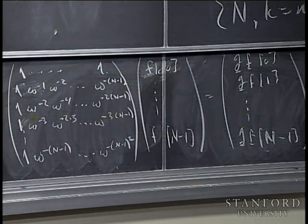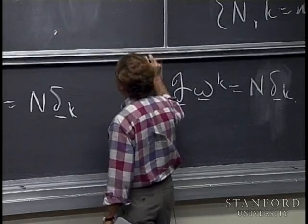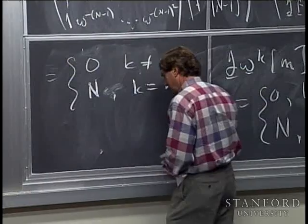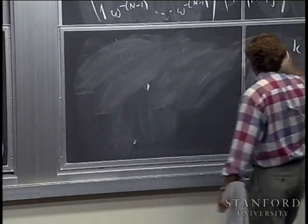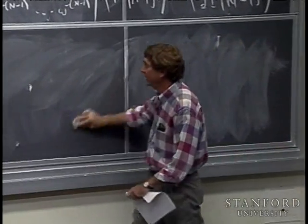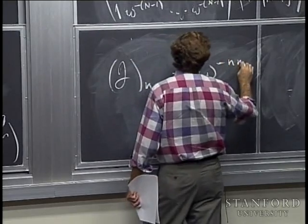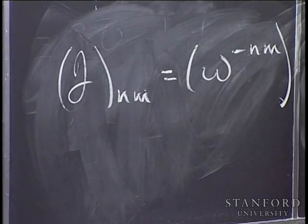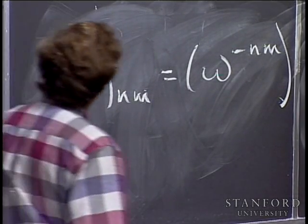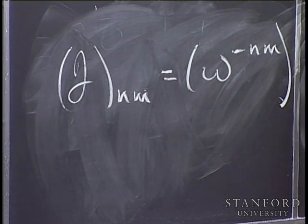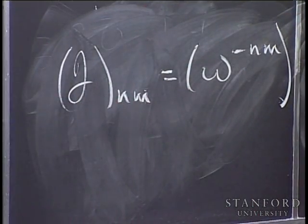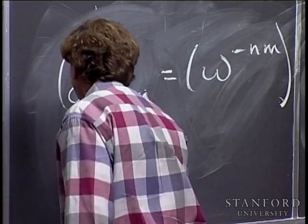You can view computing the Fourier transform as multiplication by a big N by N matrix. The Fourier transform matrix F has its nm-th entry equal to omega to the minus nm. It's a nice way of remembering it. Notice a couple of things: the matrix is symmetric in n and m — if you swap n and m you get the same answer. So F is symmetric, meaning it equals its transpose.